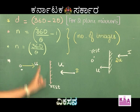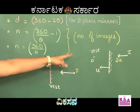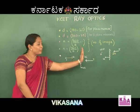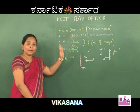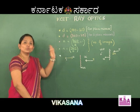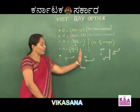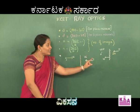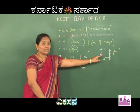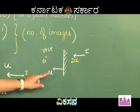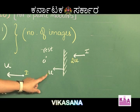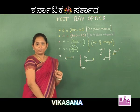In another case, where the object is stationary and the plane mirror is made to move towards the object with a velocity u, the image will move with a velocity two times the velocity of the plane mirror — that is, 2u.